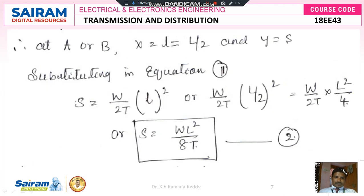X is the length of the conductor from O to P. If we replace x by L, the equation becomes S = wL²/2T for total length. However, L/2 is the half-length from terminal A to O, or O to B. Replacing y with S and x with L/2 gives w/2T × (L/2)² = w/2T × L²/4.